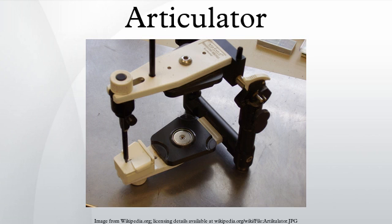Some semi-adjustable articulators have average value Bennett shift movement built into the condylar head element, replicating the average head shape of the condyle. This mimics the movement of the condyles better than some ball-shaped condylar heads found on other articulators. Normally this is achieved by the use of a face bow.